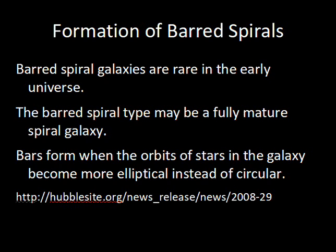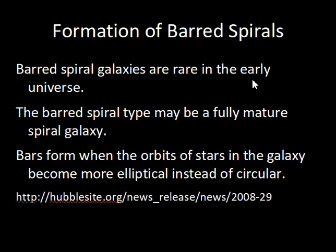What about barred spirals? Surveys of galaxies at different distances — looking back in time — show that the percentage of barred spirals decreases further back, so in the early universe there weren't as many. Perhaps regular spirals change into barred spirals: the speculation is that the orbits of stars stop being circular and become more elliptical, and the matter piles up into the bar.